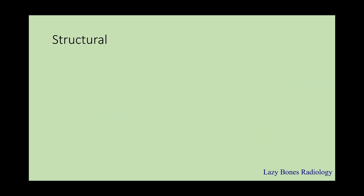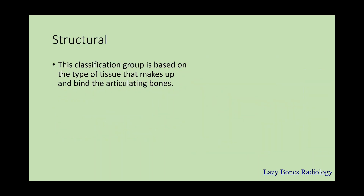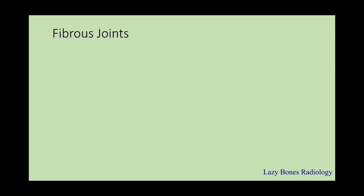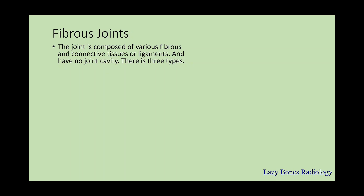Next is the structural classification. This group is based on the type of tissues that make up and bind the articulating bones. There are three types of connective tissues: fibrous, cartilaginous, and synovial structures. The fibrous joints are composed of fibrous connective tissues or ligaments and have no joint cavity. There are three types, and they are the strongest joints in the body because they are immovable.